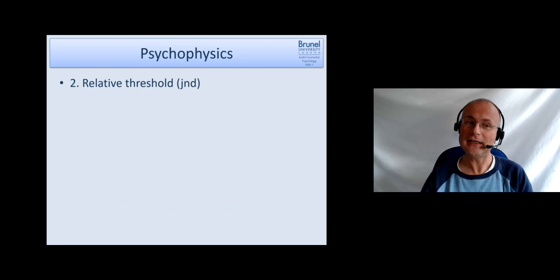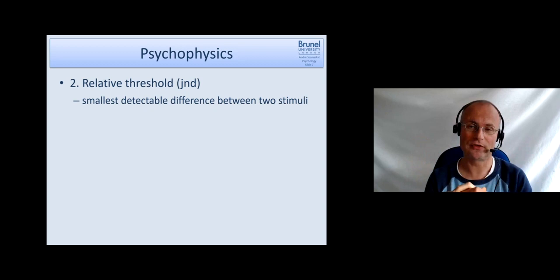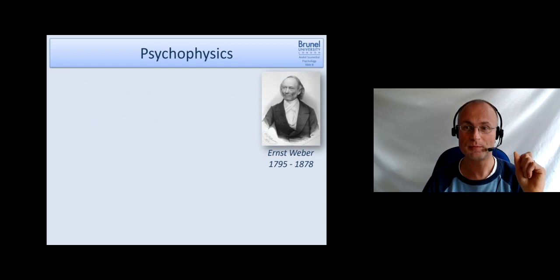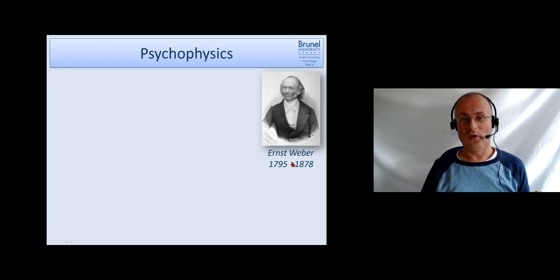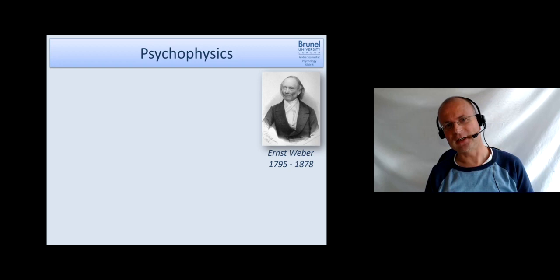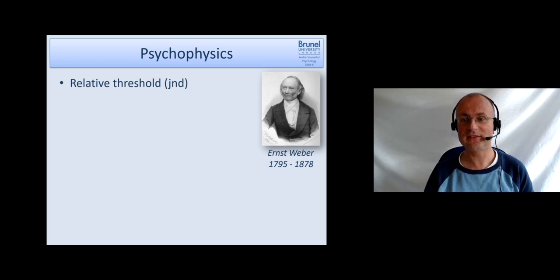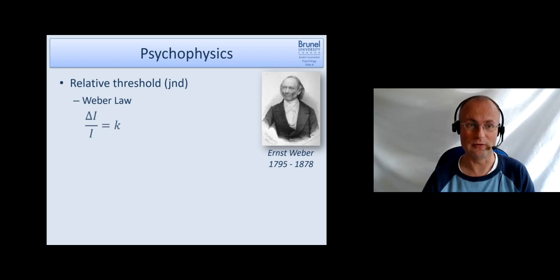The relative threshold, often abbreviated as JND, just noticeable difference, is the smallest detectable difference between two stimuli. A person who's really important here is Ernst Weber. You can see this work on psychophysics was done at a time where really the very first steps in experimental psychology, cognitive psychology have been made. This is one of the basis. Weber worked on these relative thresholds and proposed a law, Weber's Law, which looks like this.